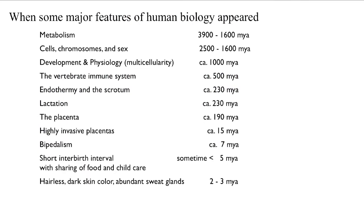Taking this historical view of important features of human biology: metabolism is one and a half to four billion years old; cells, chromosomes, and sex are about one and a half to two and a half billion years old; multicellularity is about one to one and a half billion years; our immune system is 500 million years old; endothermy and the scrotum — which descends to allow sperm to develop at lower temperature — are about 230 million years old; lactation about 230 million years; the placenta roughly 190 to 200 million years; highly invasive placentas about 15 million years; bipedalism, with all the remodeling of the birth canal, started about seven million years ago; and hairless dark skin color and abundant sweat glands about two to three million years ago, associated with long-distance running and running down game.